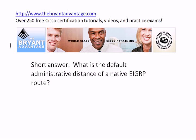Another pretty basic one here. What is the default administrative distance of a native EIGRP route? You've got to know those administrative distances cold, so we need to know what the default AD of a native EIGRP route is.